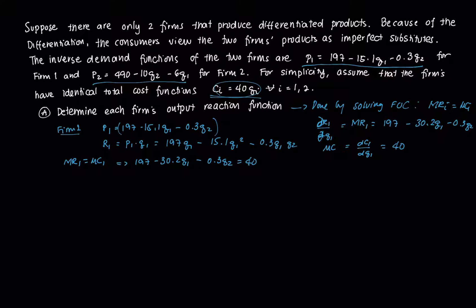If we isolate Q1, we get Q1 equals (157 minus 0.3Q2) all over 30.2. This is the ORF, or output reaction function, of firm 1.